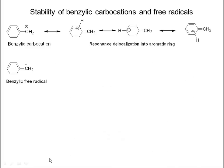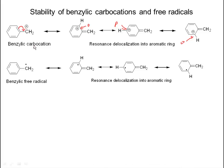What we find is that these carbocations and radicals are stabilized by resonance. We can write resonance structures by moving the double bonds and swapping the location of the carbocation and the double bond. We delocalize the positive charge at the ortho position, at the para position, and at the other ortho position — over several atoms.